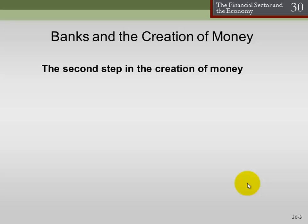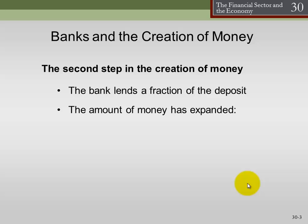The second step in this process is that the bank lends a fraction of that deposit out. The amount of money now in circulation has just expanded. The overall money supply becomes the initial deposit — the initial increase in monetary base, or outside money — plus that new loan amount. This loan is the inside money we're talking about, a monetary asset created by the financial system.